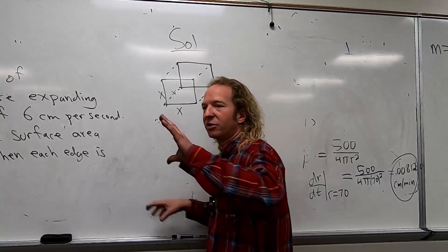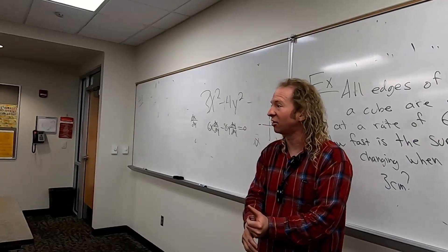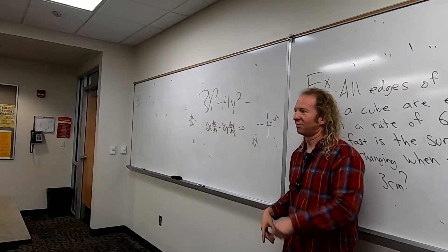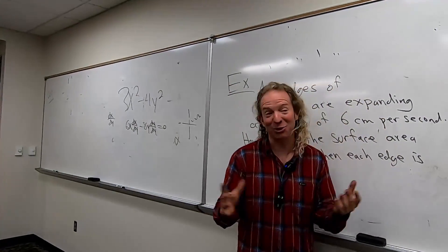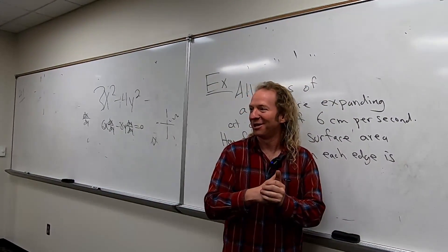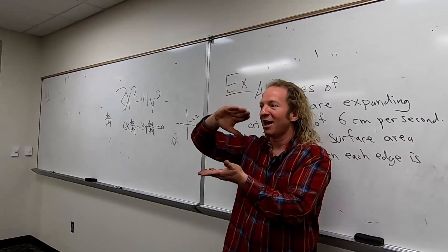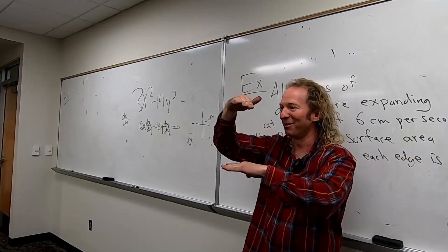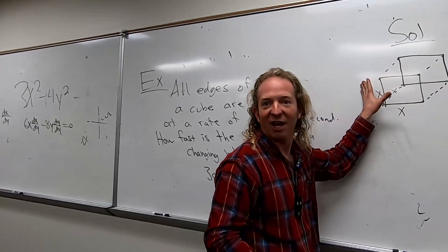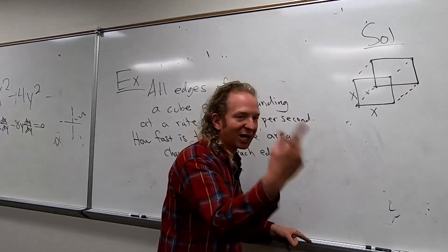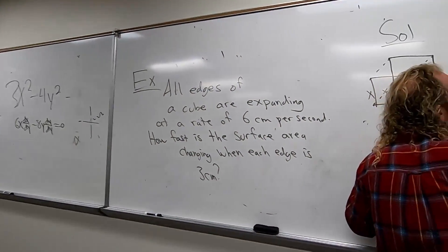So we want the surface area. How many sides are on a cube? Six. Because you have one on top, one on the bottom, and then four around — it's like the Macarena, right? One on top, one on the bottom, and four around. So six. What's the area of one side? X times X, so it's X squared. The surface area is six X squared, because you have six sides and they're all X squared.